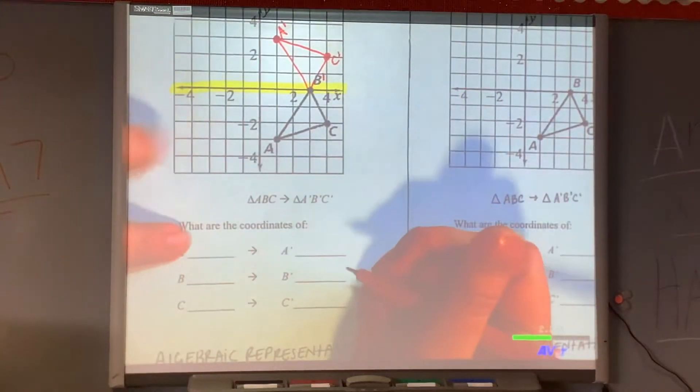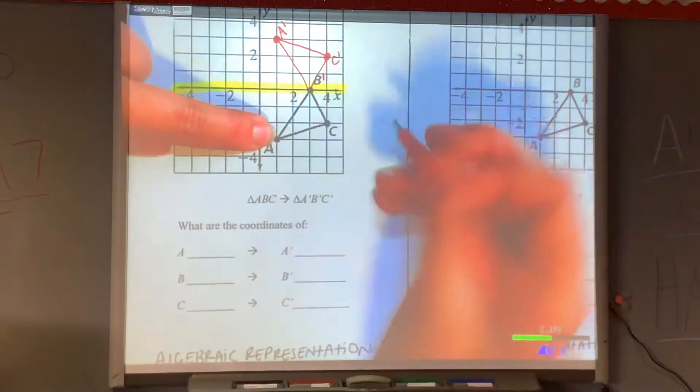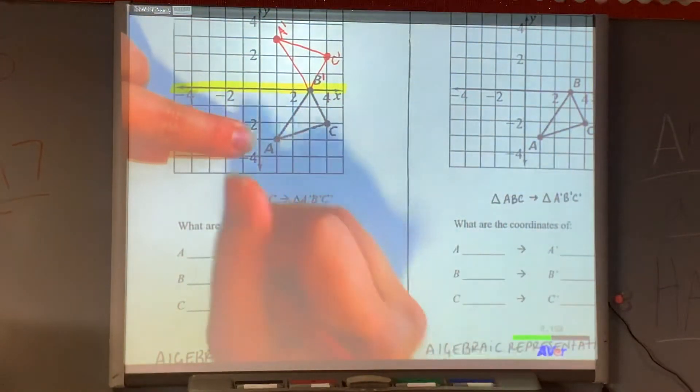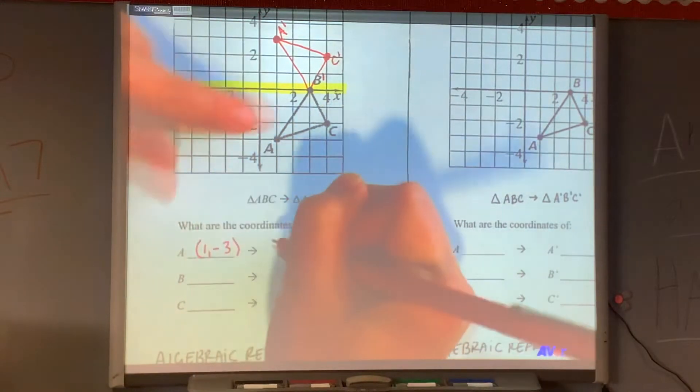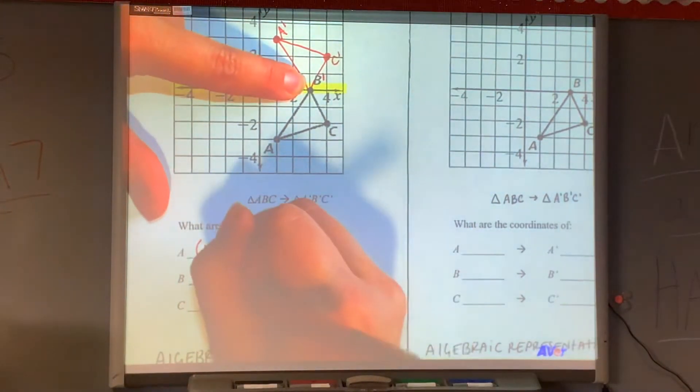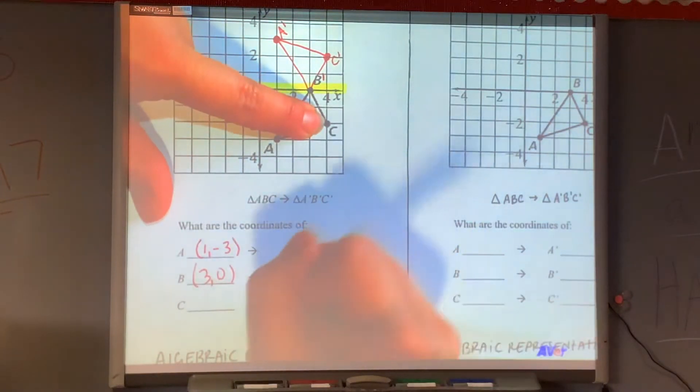Let's talk about how it changes the coordinates. So if I had the old ABC, let's go ahead and write the coordinates for the old ABC. A was (1, -3). B was (3, 0). And C was (4, -2).